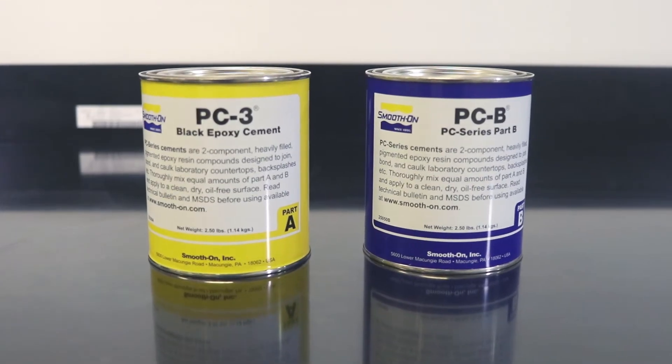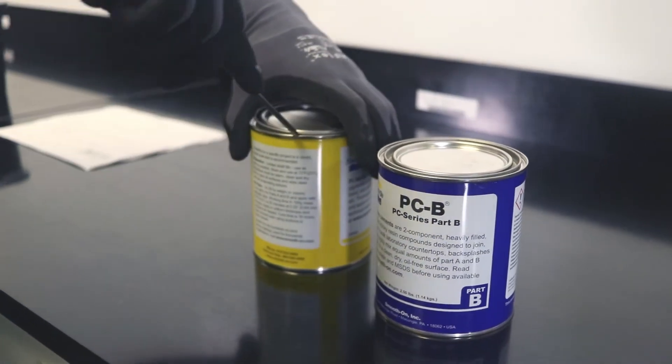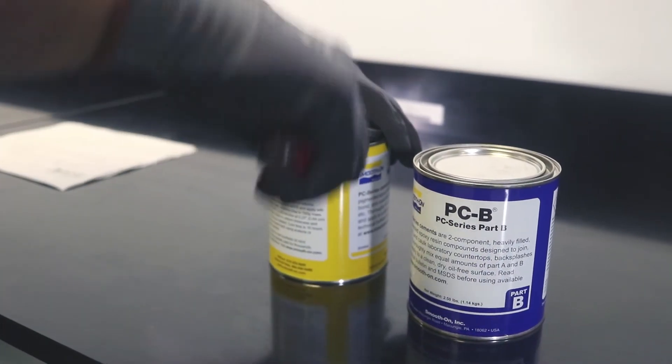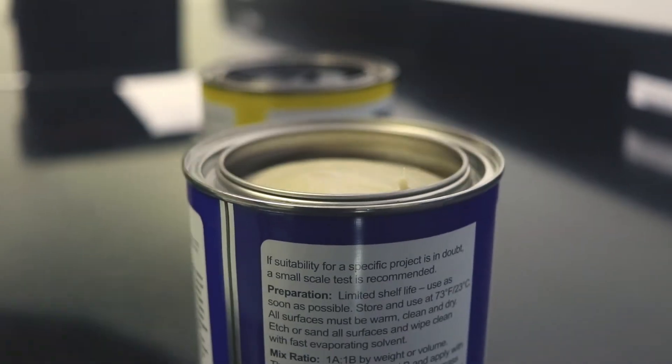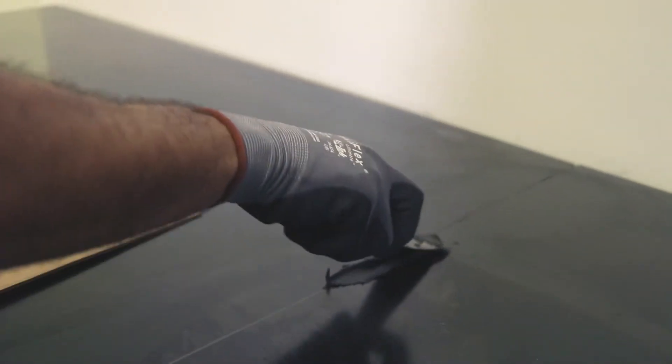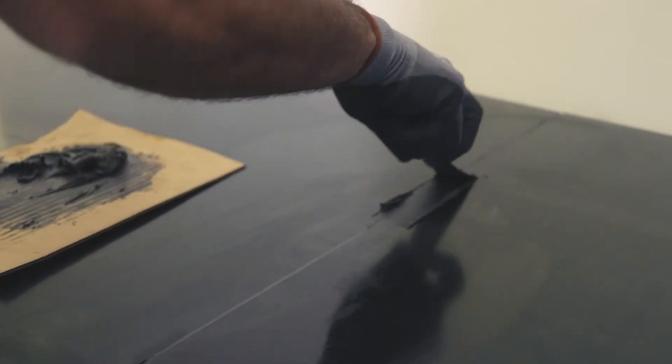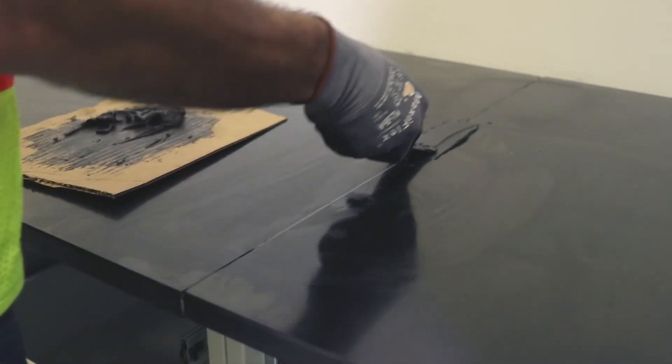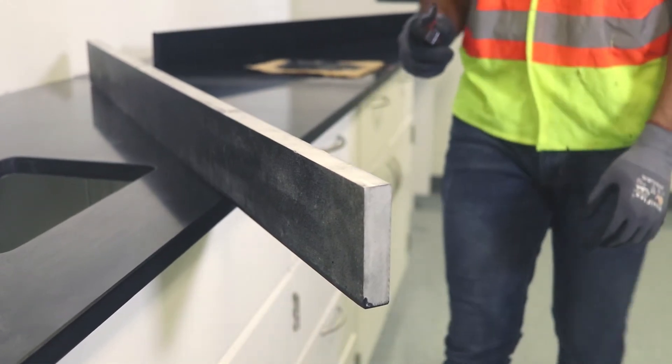Prepare the epoxy cement. The cement comes in two parts, A and B. Mix the two parts half and half on a smooth, disposable surface, and use the mixture as quickly as possible. If the cement isn't used within 15 to 20 minutes, the mixture will harden and be wasted.